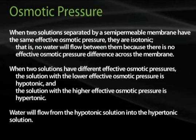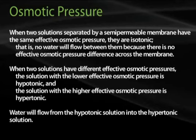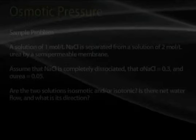When two solutions separated by a semi-permeable membrane have the same effective osmotic pressure, they are isotonic — no water will flow between them because there is no effective osmotic pressure difference. When two solutions have different effective osmotic pressures, the solution with the lower effective osmotic pressure is hypotonic, and the solution with the higher effective osmotic pressure is hypertonic. Water will flow from the hypotonic solution to the hypertonic solution.